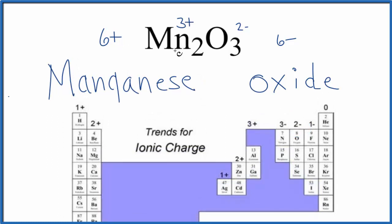And because each of the manganese atoms here has a three plus ionic charge, we write the Roman numeral three between manganese and oxide.